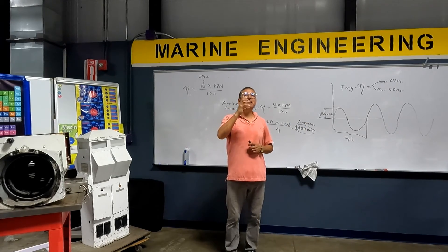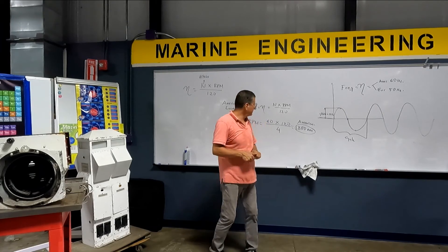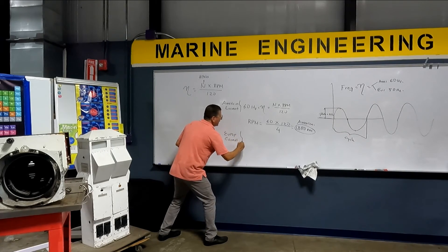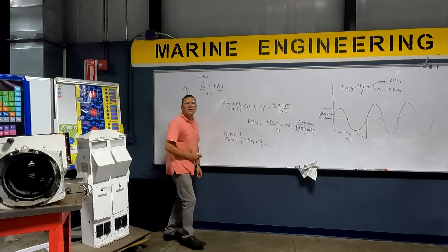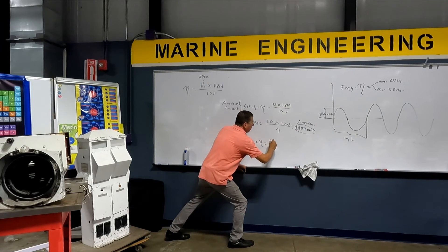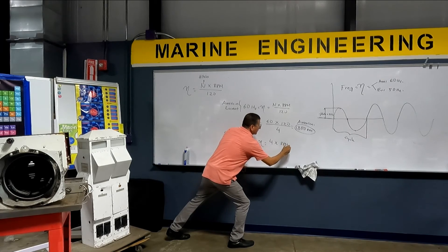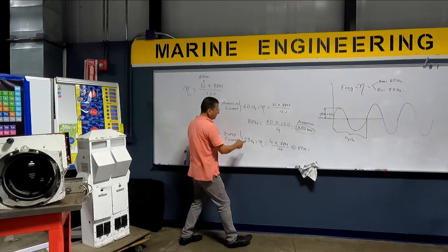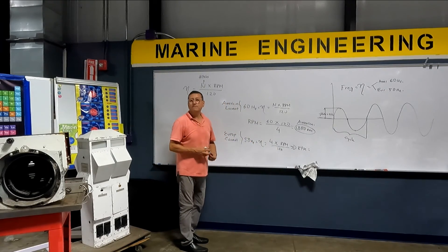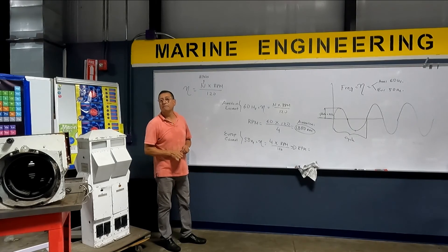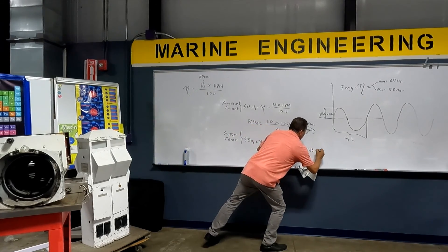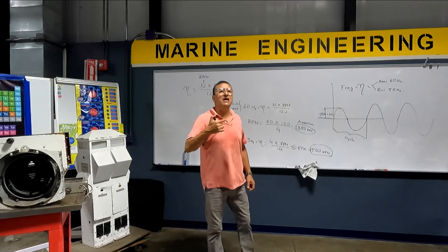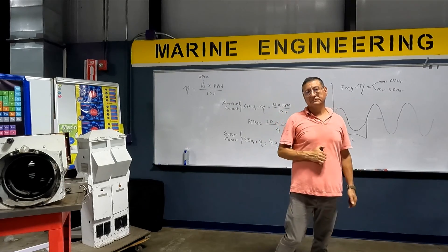Now let's calculate for European power. European power is 50 hertz. Using the same formula: RPMs = (50 × 120) / 4 = 1500 RPMs. So a generator in a European boat runs at 1500 RPMs.